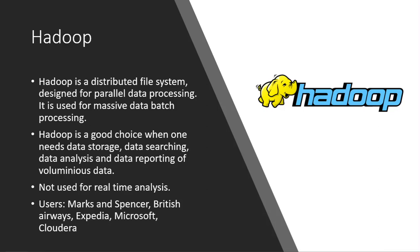Hadoop was launched in 2006. It is a distributed file system used for parallel processing. Importantly, Hadoop is not used for real-time analysis — that's what Kafka, Cassandra, and Spark are for. Hadoop is specifically for batch processing, so when you want to do massive batch processing of your data, you use Hadoop.